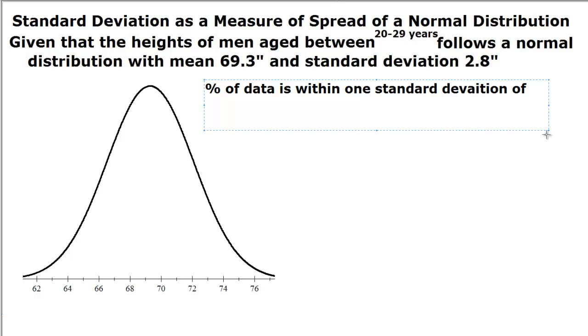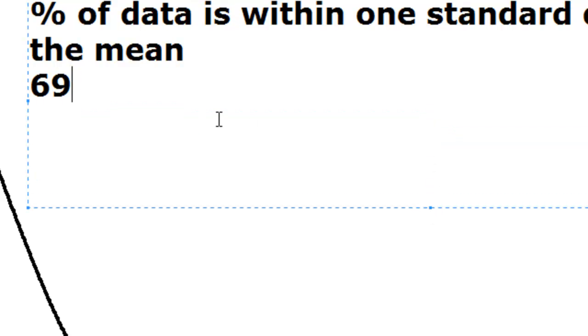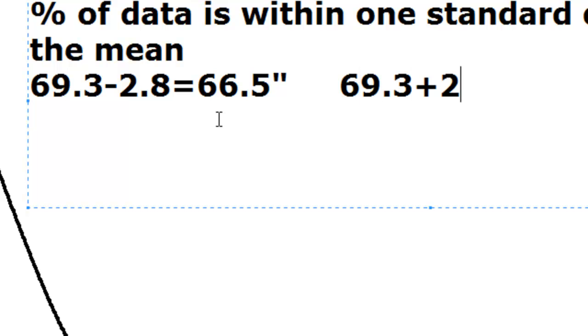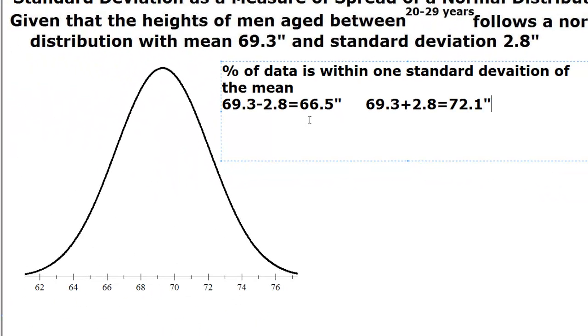So what do we mean by that? Notice that the mean is 69.3 inches. So if we go one standard deviation below, I'll get 66.5 inches. And if I go one standard deviation above, what would I get? That is 72.1 inches.